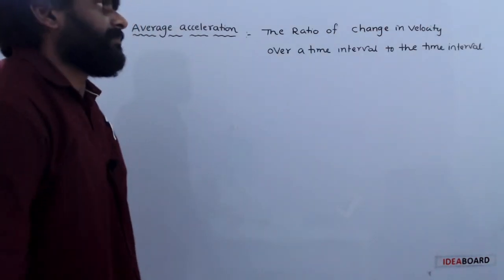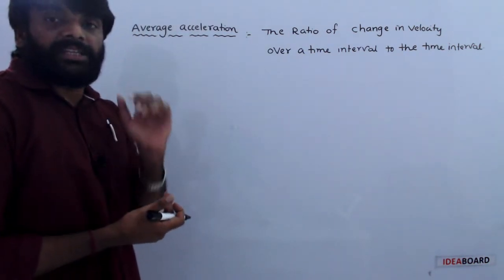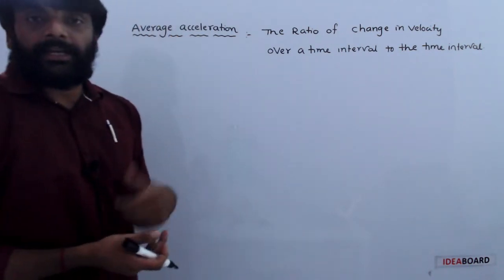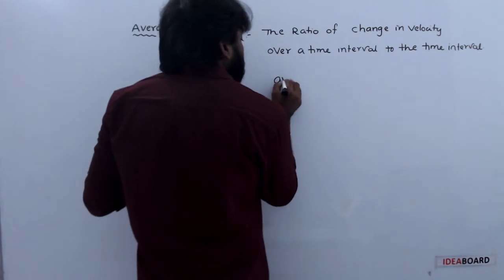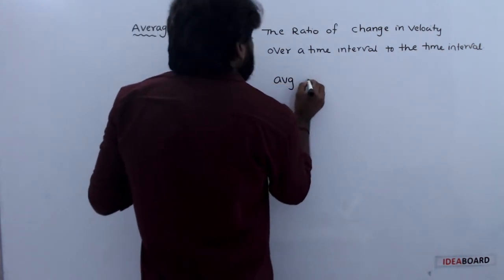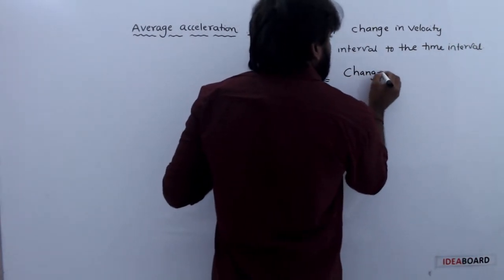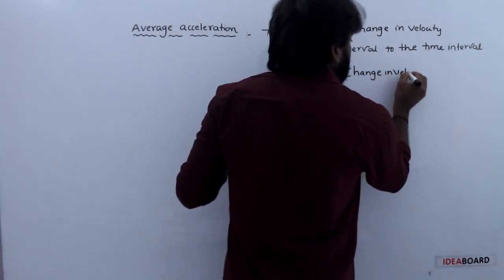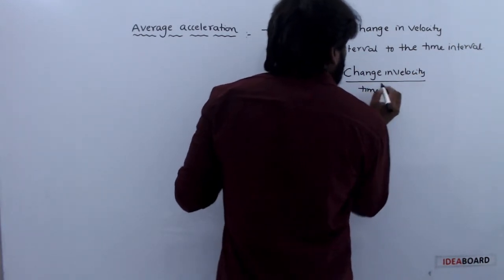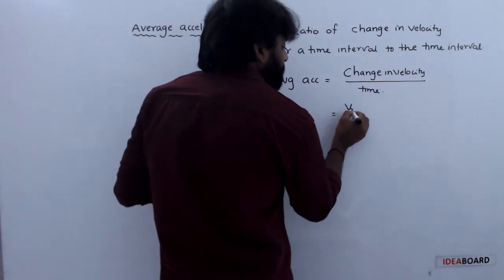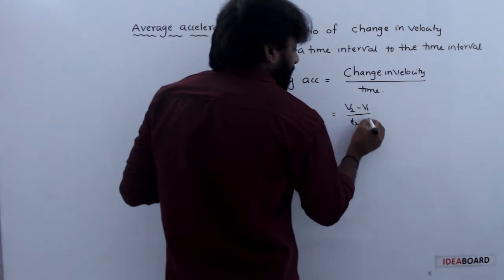Next, average acceleration. Average acceleration is defined as the ratio of change in velocity over a time interval. Average acceleration equals change in velocity by time, written as v2 minus v1 divided by t2 minus t1.